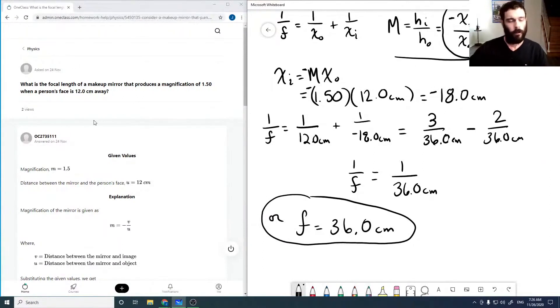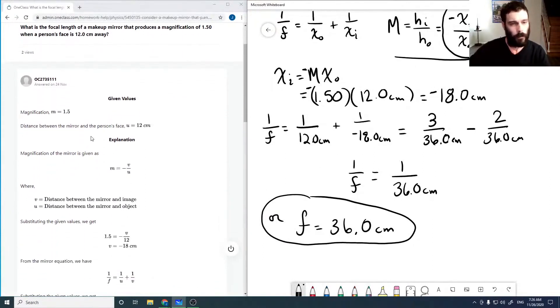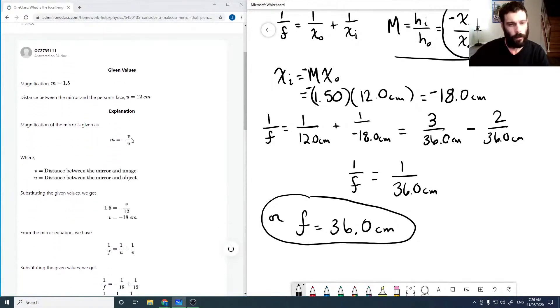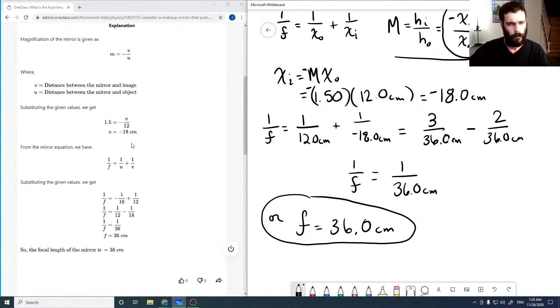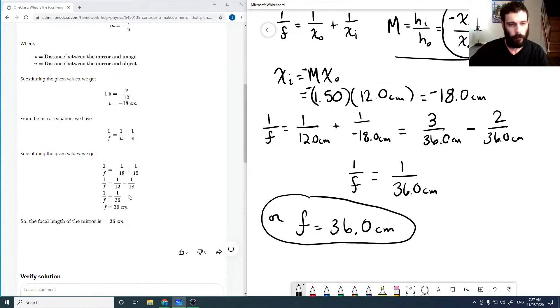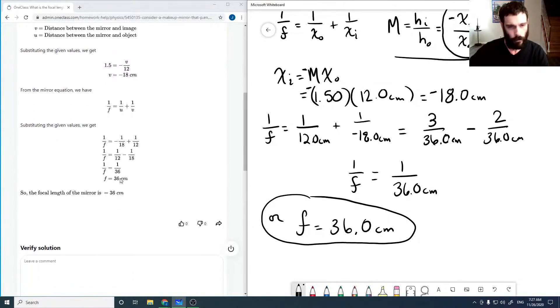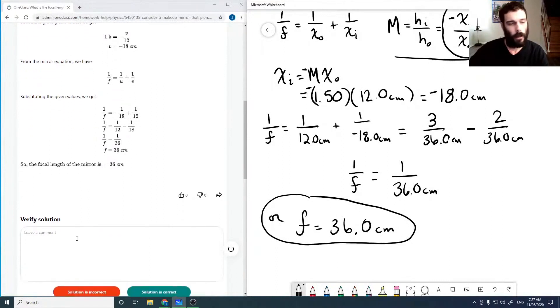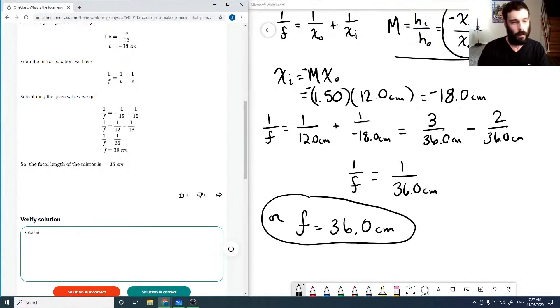All right, so looking through the solution: the magnification can be related to the distance between the mirror and the object and the mirror and the image like this. Substituting our values we get minus 18, which is what we had. And from the mirror equation we can get our focal length, which comes out to be... yeah, so our focal length we get is 36 centimeters. So that looks good.